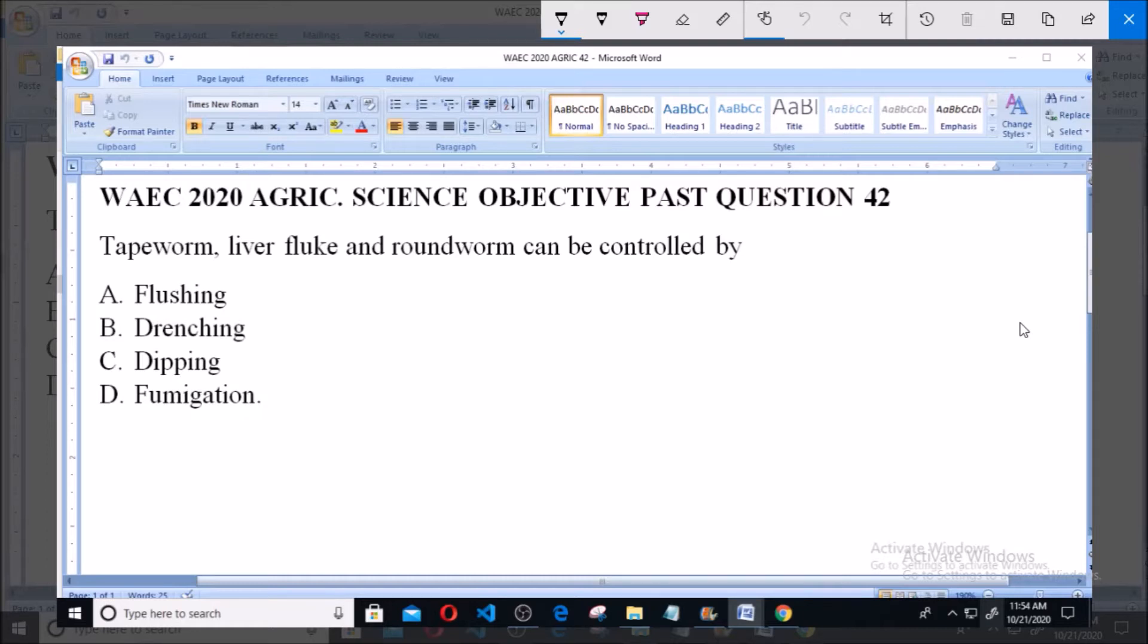Tapeworm, liver fluke and roundworm can be controlled by A. Flushing, B. Drenching, C. Dipping, D. Fumigation.